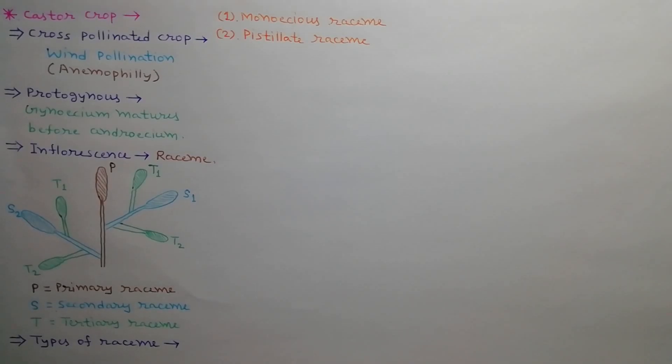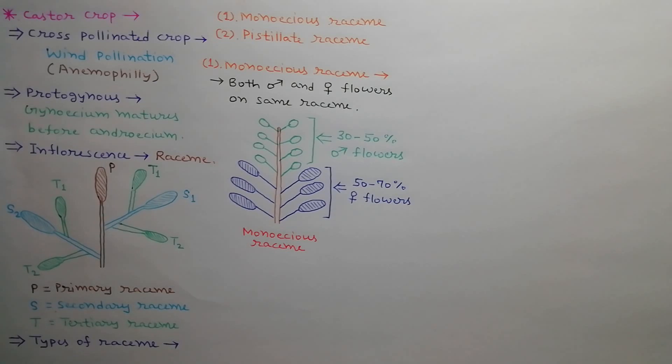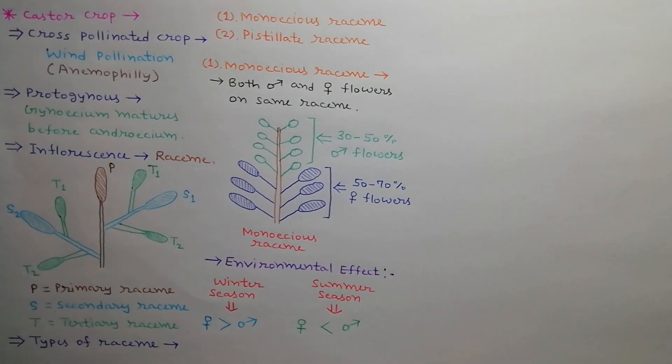There are two types of racines found in castor plants: monoecious racine and pistillate racine. When both male and female flowers are found in the same racine, it is called monoecious racine. As shown in the diagram, upper 30 to 50% flowers are staminate and lower 50 to 70% flowers are pistillate. Environment affects the percentage of male and female flowers. In winter season, percentage of female flowers increases, and in summer season, percentage of male flowers increases.